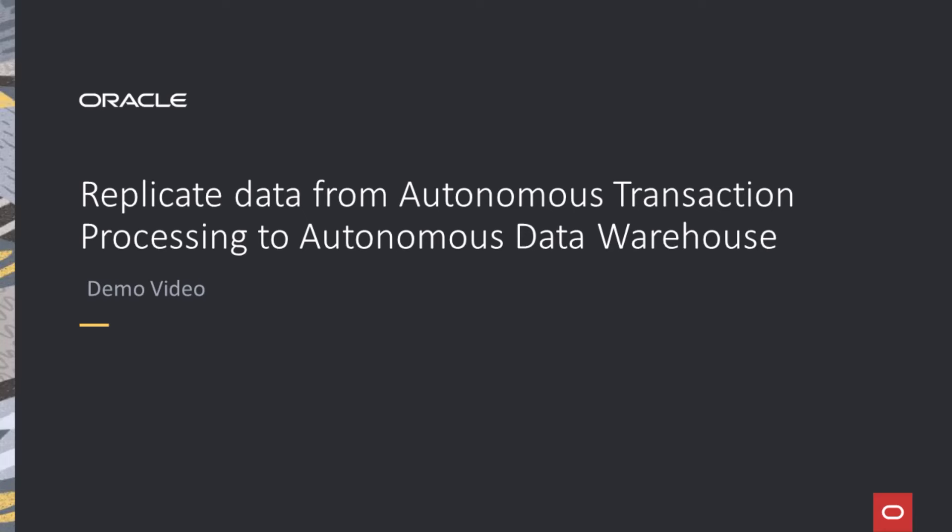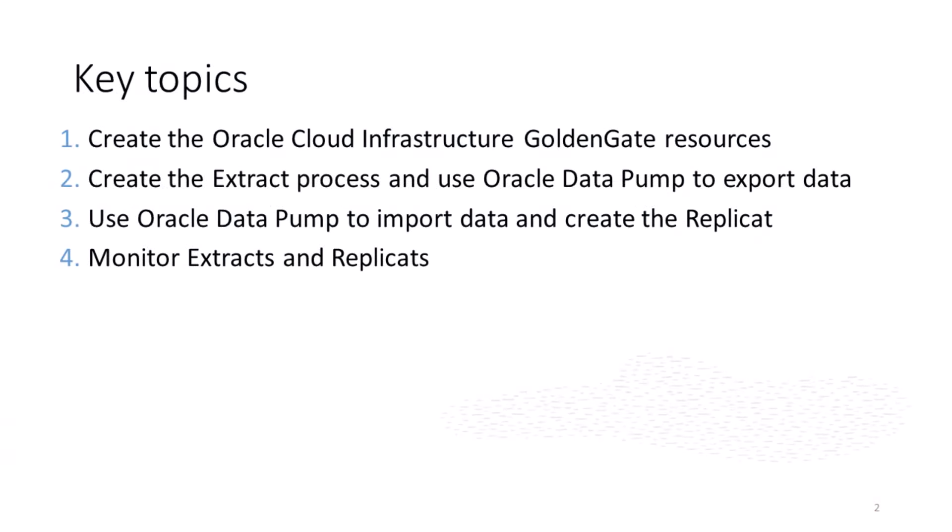Curious about how OCI GoldenGate works? In this video, you'll learn how to create an OCI GoldenGate data replication deployment, create and assign source and target connections, use Oracle Data Pump to export schema tables from the source database and import them into the target database, add and run an extract and replicat, and then perform inserts into the source database to monitor replication from source to target. Let's get started!